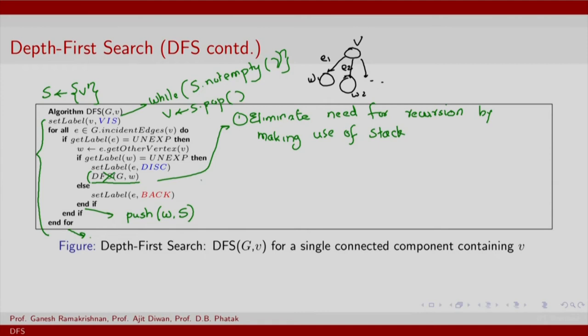What we need to do is initially insert element V into the stack, and add a while block: while S is not empty, we pop the latest element V as S.pop(). We perform all these activities on the incident edges for V, get all the W's, push all those W's into S, and continue this whole exercise until S becomes empty. This gives you the same effect as the original DFS recursive call without needing to invoke recursion.